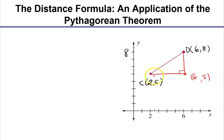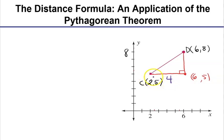I know the length of this horizontal leg. Why do I know the length of this, but not the one that's at a slant? Because the y values are the same. So if I'm traveling from x=2 to x=6, that's like going from mile marker 2 to mile marker 6 — that's 4 miles. So the distance between (2,5) and (6,5) is 4.